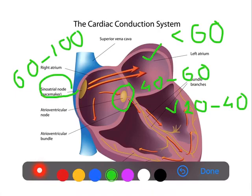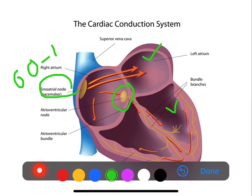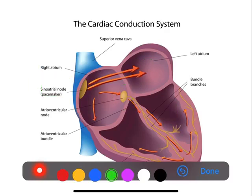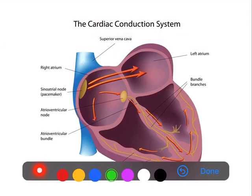As we go down from the SA node to the atria, to the AV node, to the ventricle pacemakers, the rate of impulses produced decreases. So if the SA node is functioning normally, it is producing an impulse at a much higher rate compared to the other pacemakers, and it will hide or mask the impulses produced by the other pacemakers.